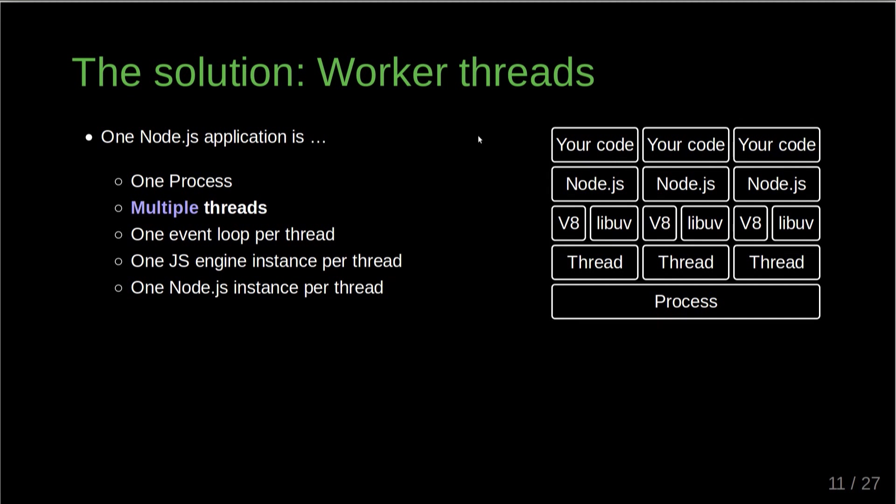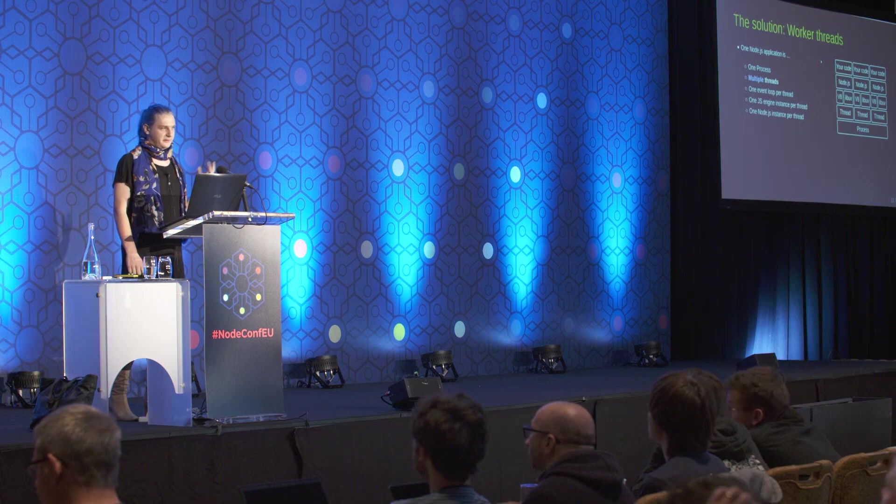Instead of having a single thread, you have multiple threads, and for each of these threads you have a separate event loop, separate JS engine instance, and on top of that a separate Node.js instance — or in the browser a separate worker context, which is kind of different from the main browser context.